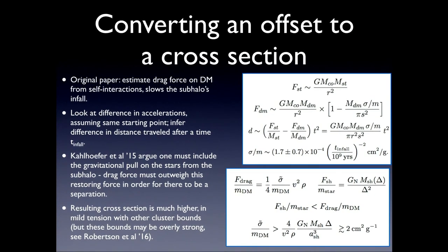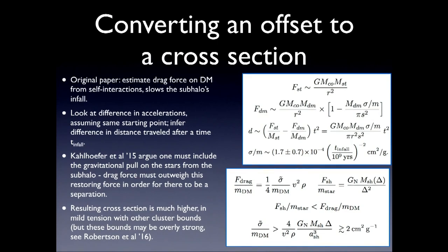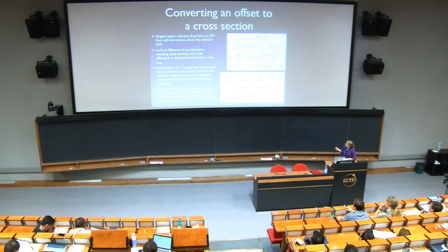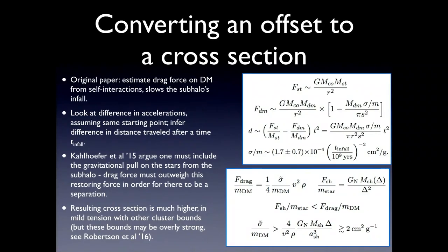A subsequent paper pointed out a problem with the conversion from this offset to the cross-section. What they did was estimate the drag force on dark matter from self-interaction, saying that drag force would slow the subhalos. So they looked at the difference in accelerations, assuming dark matter and stars started at the same point, and used classical mechanics to infer the difference in distance traveled. Karl-Hoffer et al. then pointed out that this calculation didn't include the fact that stars will also get pulled along with the dark matter gravitationally. When you take that into account, the cross-section you actually need is much larger - more like 2 centimeters squared per gram rather than 2 times 10 to the minus 4. That's four orders of magnitude difference from a modeling error.